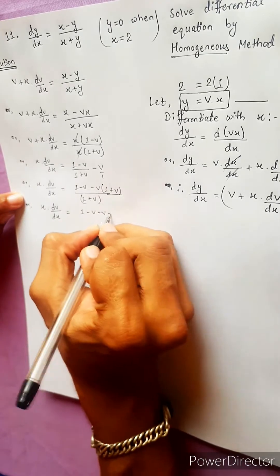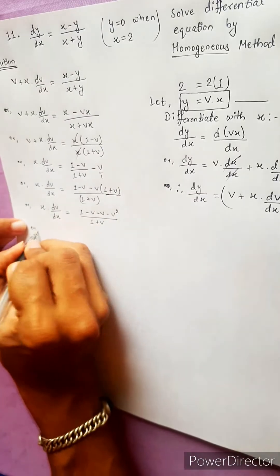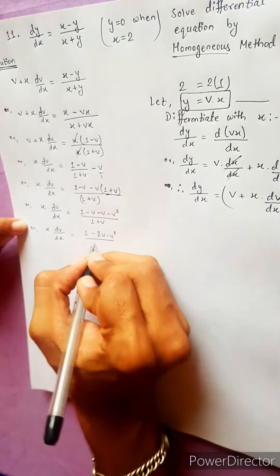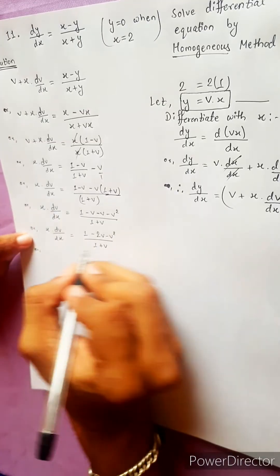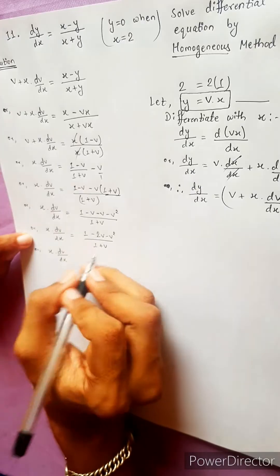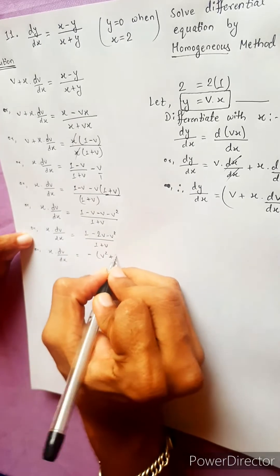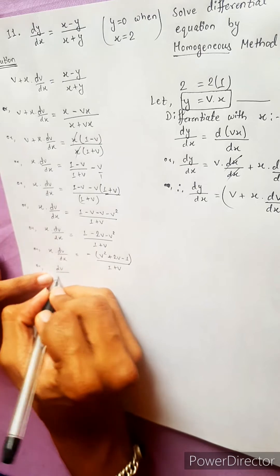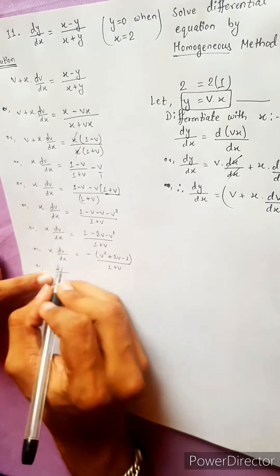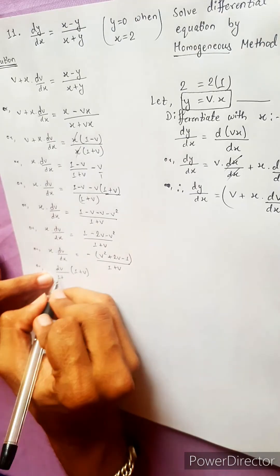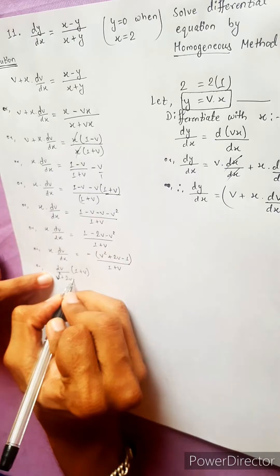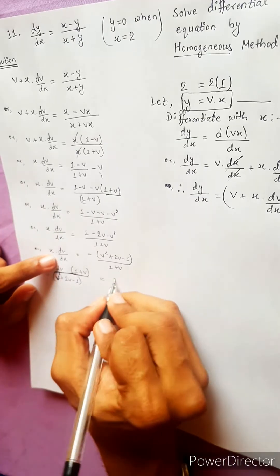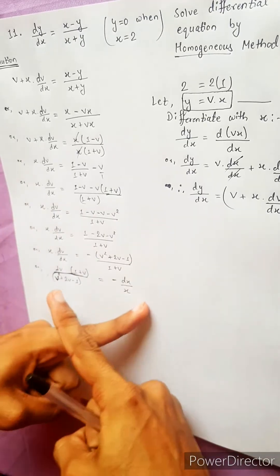x times dv/dx equals (1 minus v minus v minus v²) divided by (1 plus v), so x·dv/dx equals (1 minus 2v minus v²) divided by (1 plus v). Rearranging: minus v² plus 2v minus 1, divided by (1 plus v). Cross-multiplying: dv times (1 plus v) divided by (v² plus 2v minus 1) equals dx.